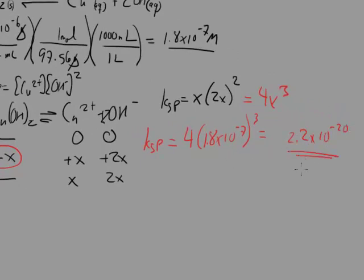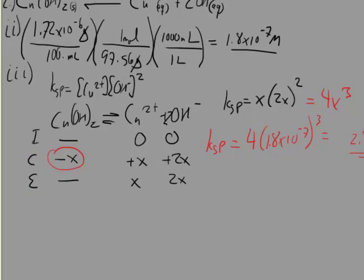Part B is about a different salt — zinc hydroxide rather than copper 2 hydroxide. Question B tells us that the Ksp for zinc hydroxide is 7.7 times 10 to the negative 17th at 25 degrees C. Question I asks us to calculate the solubility in moles per liter of zinc hydroxide at 25 degrees C in a solution that has a pH of 9.35.